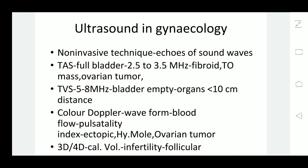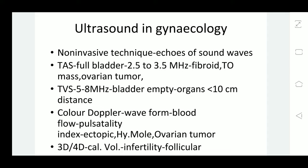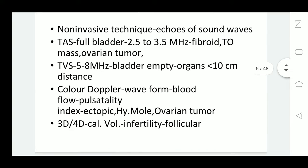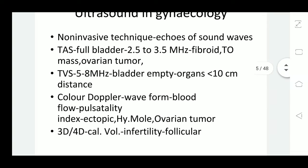In transabdominal ultrasound, we need a full bladder, and 2.5 to 3.5 megahertz sound waves are used. It is often used for some mass or abdominal mass — to assess what the mass is. It could be a fibroid, a DO mass, or it could be some ovarian tube pathology.